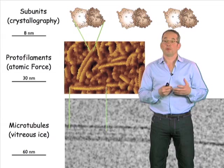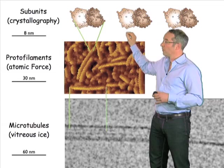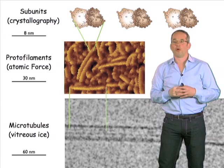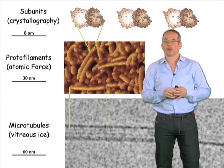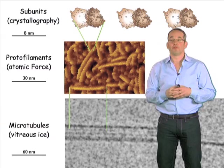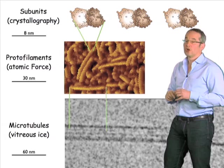Microtubules have interesting organization. On the top I've shown you dimers. We know the structure of the dimer in detail from a number of different structural techniques, such as crystallography and also from electron microscopy. Dimers form head-to-tail arrangements of protofilaments, which I've shown down here using a technique called atomic force microscopy. These protofilaments associate side-to-side to form a tube. In vivo, there are about 13 protofilaments per microtubule. At the bottom you're seeing a microtubule by a technique called vitreous ice, where you can see the individual protofilaments.